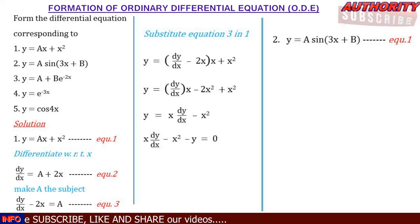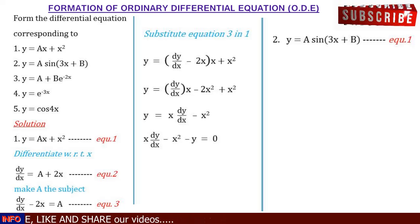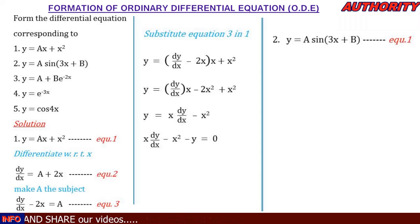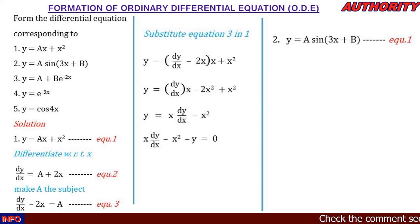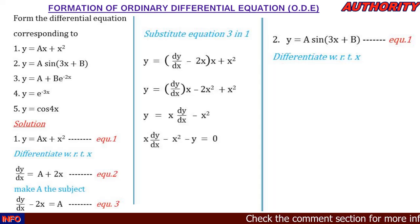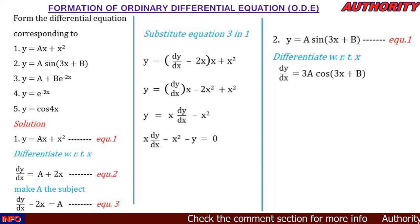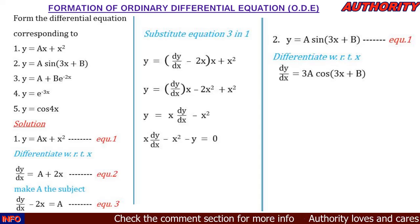For number two, y = a·sin(3x + b). Here we have two constants, so we differentiate twice. Call this equation 1. Differentiating for the first time, dy/dx = 3a·cos(3x + b), using the chain rule. Call this equation 2.